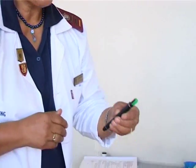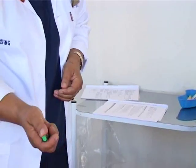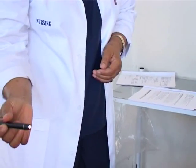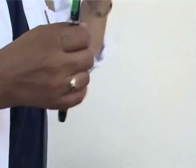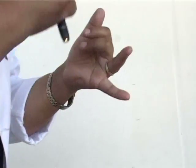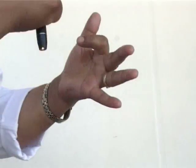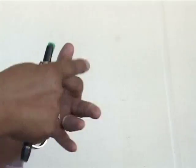Now we're going to inspect the nasal cavity using a torch to look inside. We're going to look at the nasal mucosa, the nasal septum, and the turbinates to see if there are any abnormalities. We also inspect for swelling, foreign objects, bleeding, and abnormal discharges.